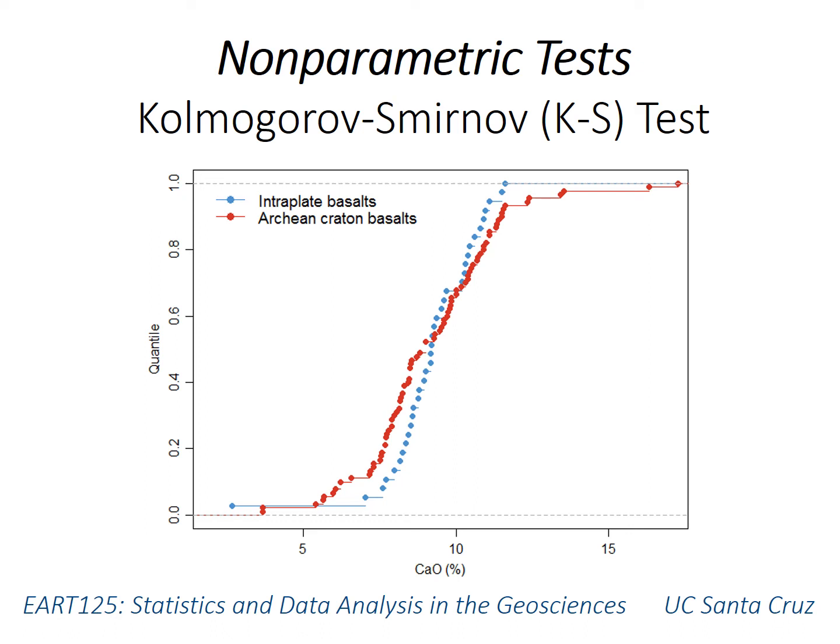This video introduces the Kolmogorov-Smirnov test, often just called the KS test. It's the first of the non-parametric tests we'll cover in this course. Non-parametric tests don't require that the data follow a normal distribution. The previous tests, like the T test, ANOVA, and the F test, are all parametric tests because they have that assumption of normality.